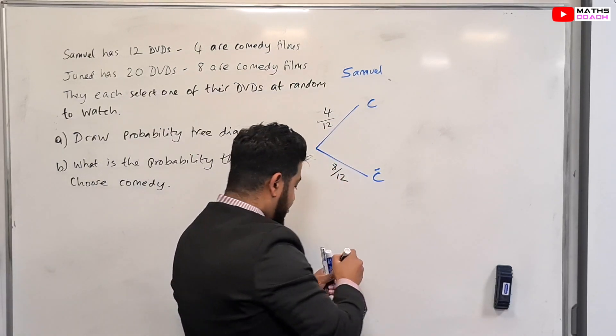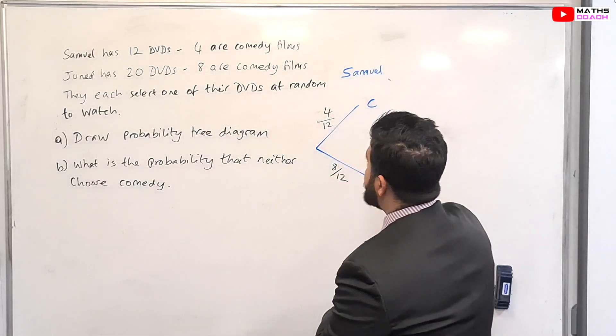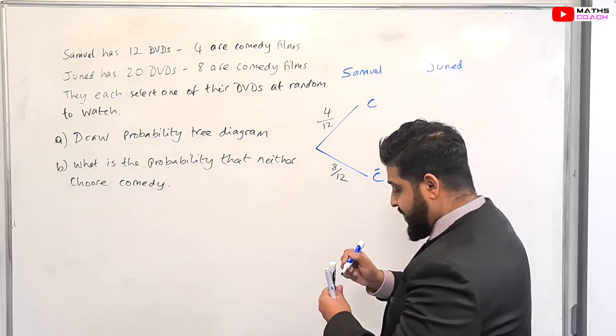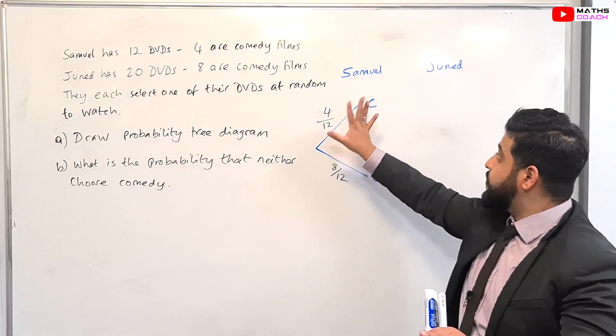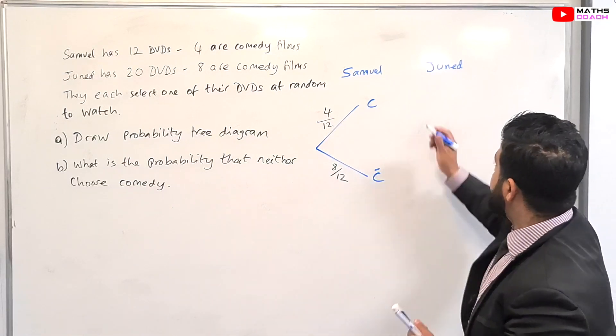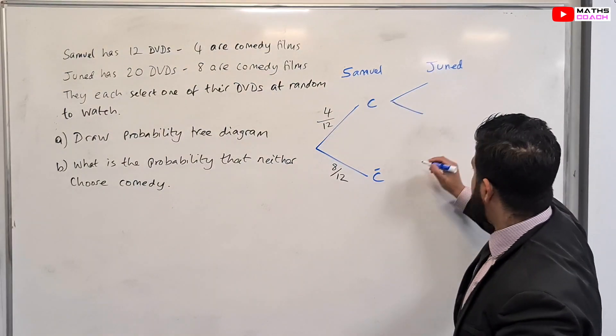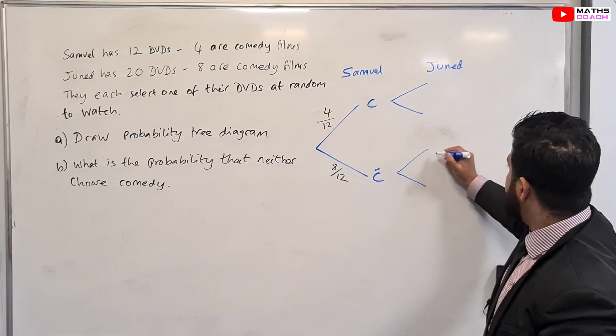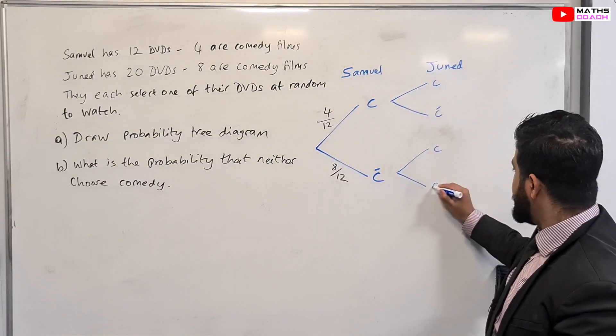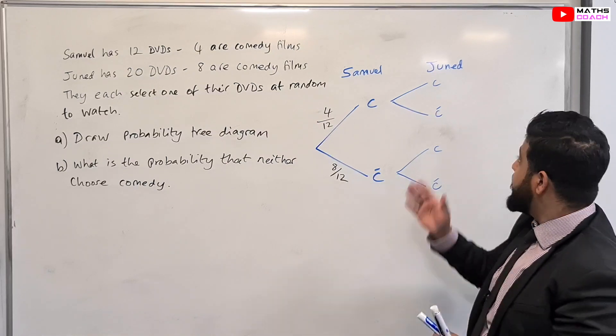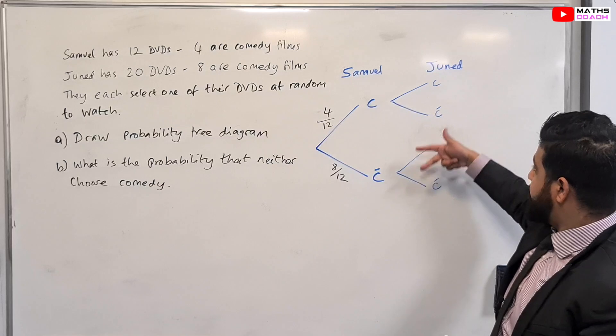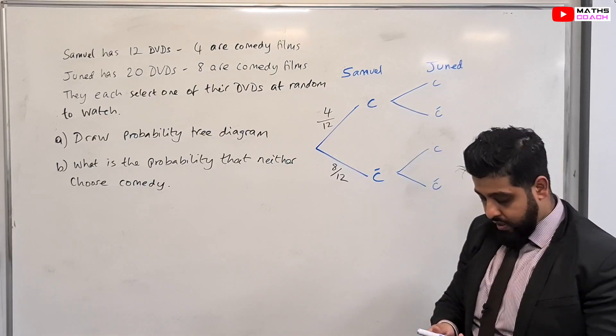Now when it comes to the turn of Junaid you can write this here. Now Junaid will choose regardless of what Samuel has chosen. So we will draw his tree branches here separately. So Junaid will have a comedy and not comedy, comedy and not comedy. Now if I did Junaid first then Samuel will be here and we'll have two branches each for Samuel as well.